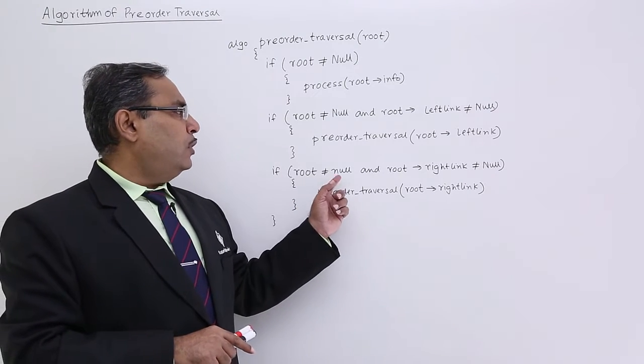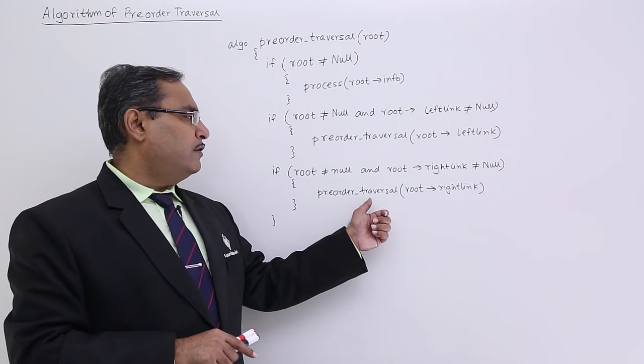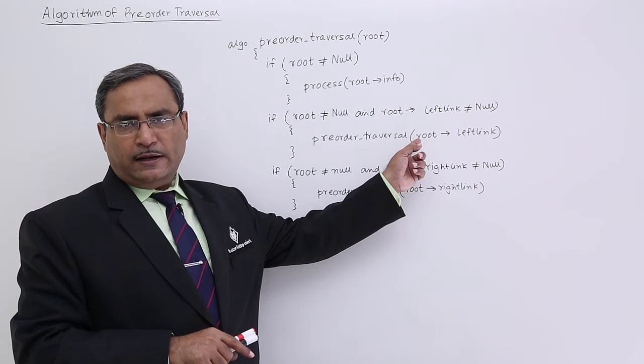If root is not equal to null and root implies right link is not equal to null, then pre-order traversal root implies right link. So here I pass the left link at first.